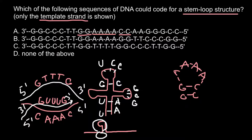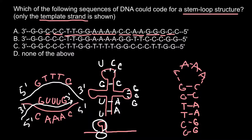Continuing the analysis of answer A: we have adenine, adenine and thymine, thymine — adenine and thymine base pair. Then guanine, guanine and cytosine, cytosine — these also base pair. Continuing outward: we have guanine here and guanine base pairs with cytosine. We have two cytosines that base pair with two guanines. So our answer is A — this DNA sequence, which is the template strand, would produce mRNA that forms a stem loop structure.